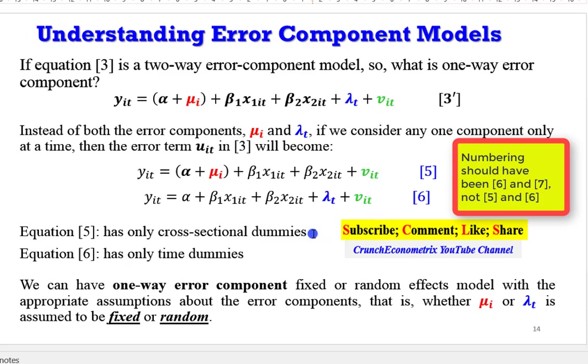Another thing I need to emphasize is that equation 5 will only have cross-sectional dummies, and equation 6 will only have time dummies. I wrote here, I said, we can have one-way error component fixed, or one-way error component random effects model, with the appropriate assumptions about the error component. It's all about the assumptions you give concerning the error structure.